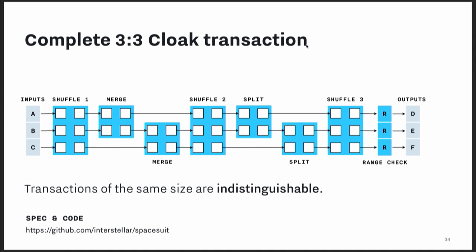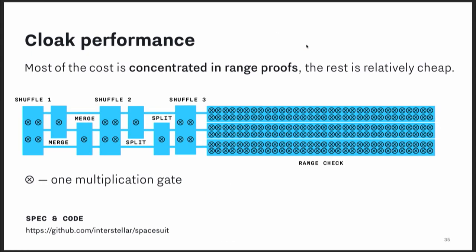This allows all transactions of the same size — e.g., three-input three-output transactions — to be indistinguishable from each other. We fully implemented this using our Bulletproofs constraint system API. In terms of performance, most of the cost is from the range proofs. For those familiar with confidential transactions versus confidential assets: confidential transactions handle only one asset type and also require range checks. The additional logic we add for multi-asset support is not much more expensive. So you get a confidential assets protocol with very similar performance to a confidential transactions protocol, but able to handle multiple assets.